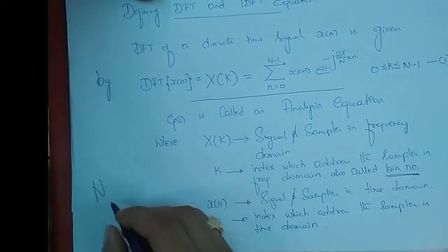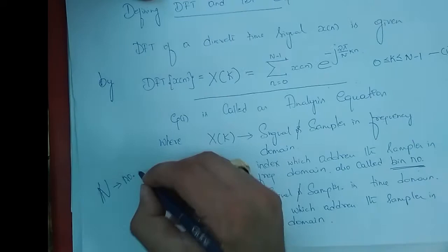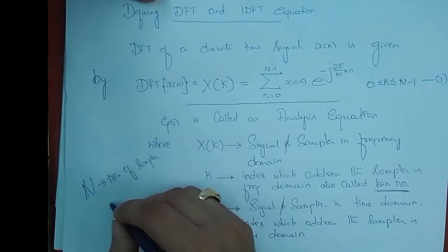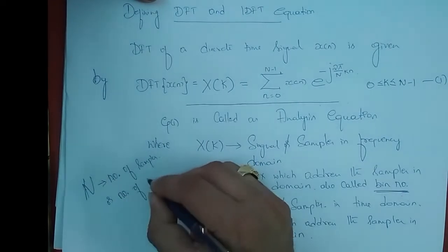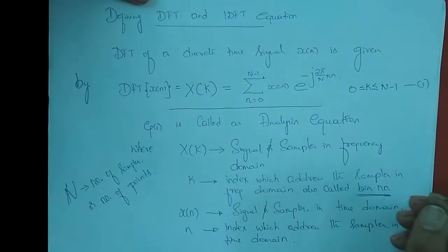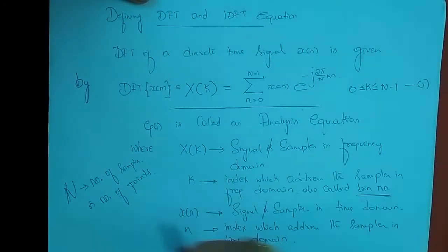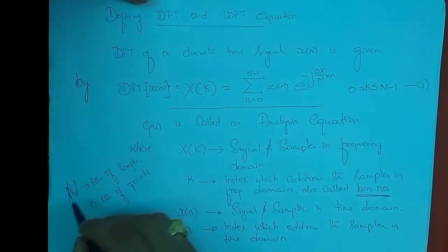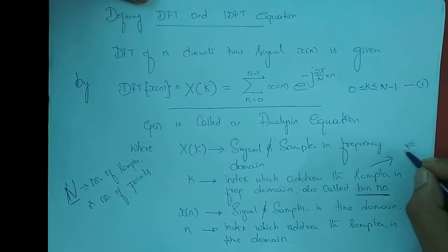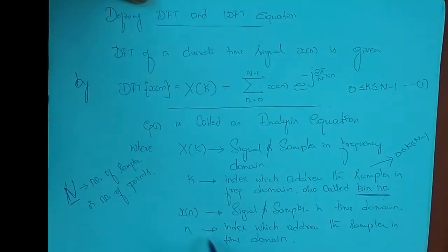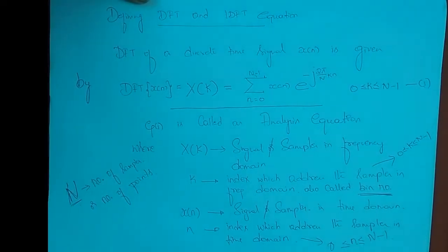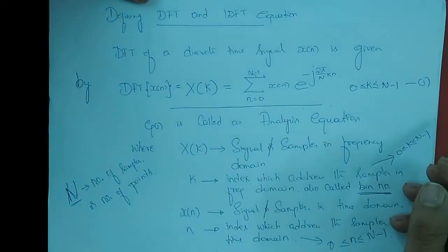What is capital N here? Capital N is the number of samples, also called the number of points. Given a sequence, we usually take a two-point DFT, four-point DFT, eight-point DFT, and so on. Both k and n are integers varying from 0 to N minus 1.